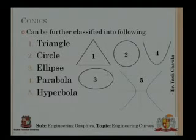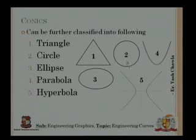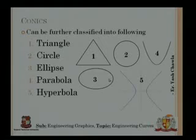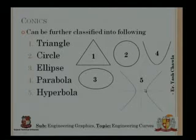Apart from triangle, the four curves — circle, ellipse, parabola, and hyperbola — are defined by eccentricity. For a circle, eccentricity e equals zero. For an ellipse, e is less than one. For a parabola, e equals one. For a hyperbola, e is greater than one.